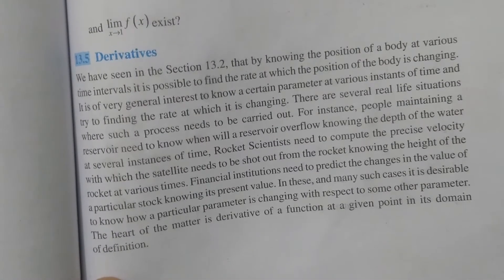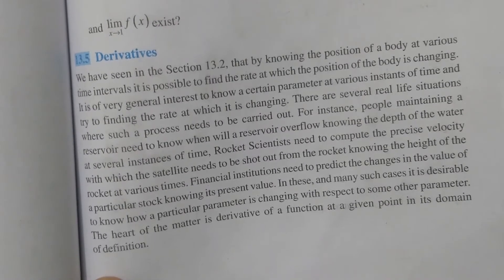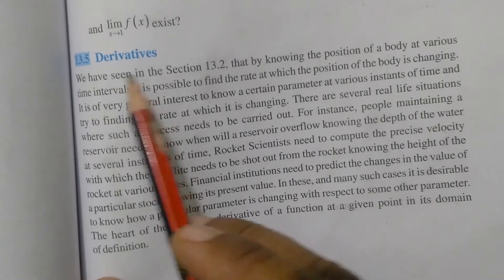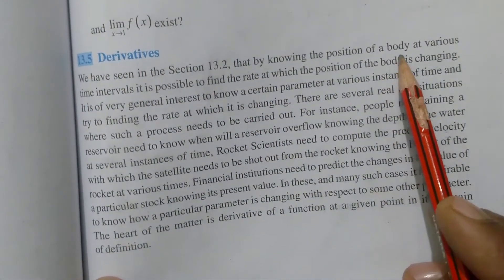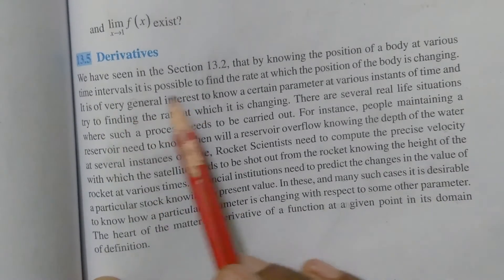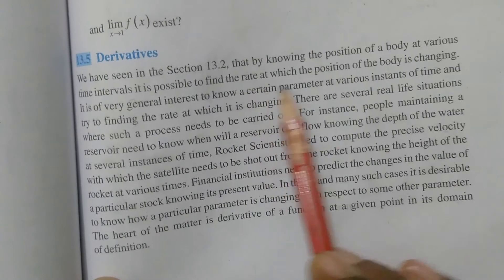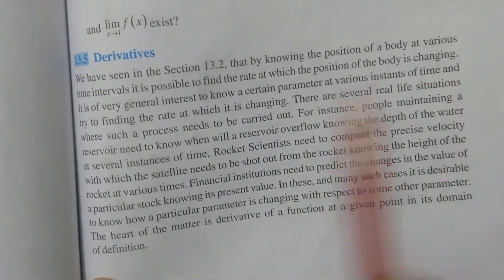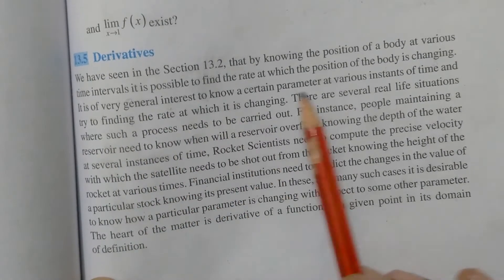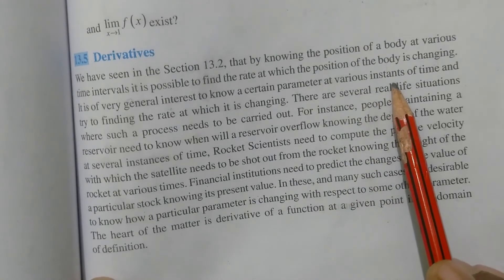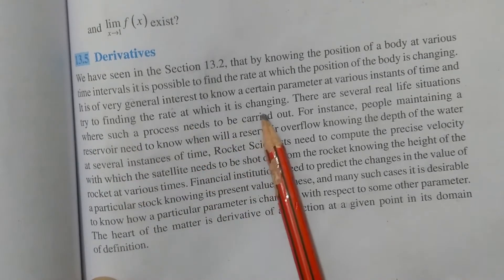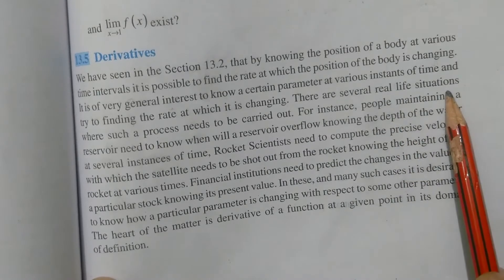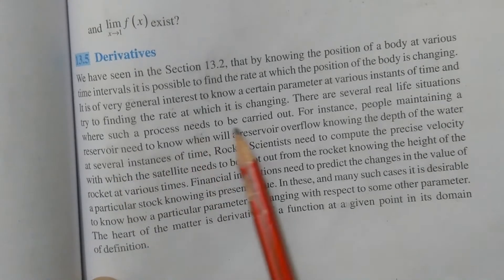First of all, we shall learn about Derivatives — what is given in the NCERT textbook. By knowing the position of a body at various time intervals, it is possible to find the rate at which the position of the body is changing. It is of very general interest to know a certain parameter at various instances of time and try to find the rate at which it is changing.